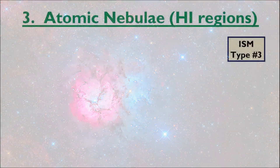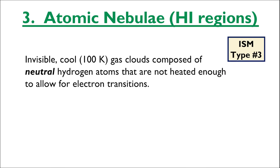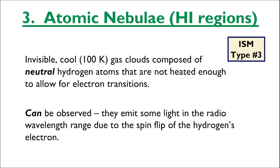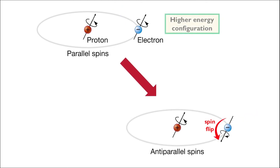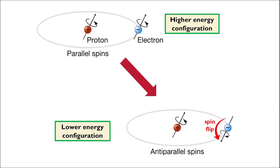The third type of interstellar medium is the atomic nebula. These are invisible cool gas clouds composed of neutral hydrogen atoms — hydrogen atoms that have not been energized enough to experience electron transitions. Since ionized hydrogen is referred to as H2 by astronomers, these neutral hydrogen clouds are H1 regions. Without any electron transitions, these hydrogen atoms cannot emit any visible light. However, they do emit light in the radio wavelength range due to the spin flip of hydrogen's electron. When the electron spontaneously flips its direction of spin, the atom goes from a higher to a lower energy configuration, releasing a photon of wavelength 21 centimeters.